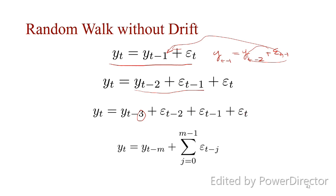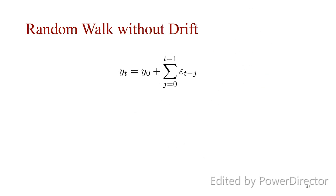If you continue to m = t-t, then this becomes y0, and this becomes from j = 0 to t-1. This is how it goes.